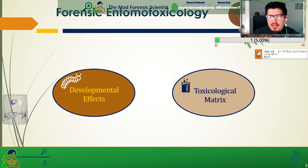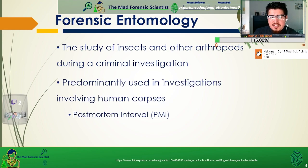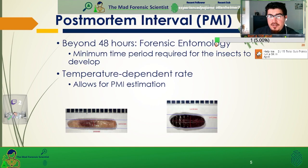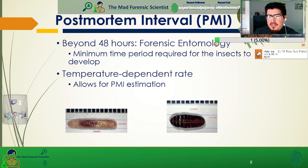Forensic entomotoxicology is a very complex subject that focuses on the developmental effects that toxins have on insects, as well as the ability to use them as a toxicology matrix. First, we'll talk about what forensic entomology is — it's the study of insects and other arthropods during a criminal investigation, predominantly used in investigations involving human corpses or determining the post-mortem interval. Beyond 48 hours after death, forensic entomology is the most reliable technique for determining PMI. Shown here are a larvae and a pupa image with the stereomicroscope.